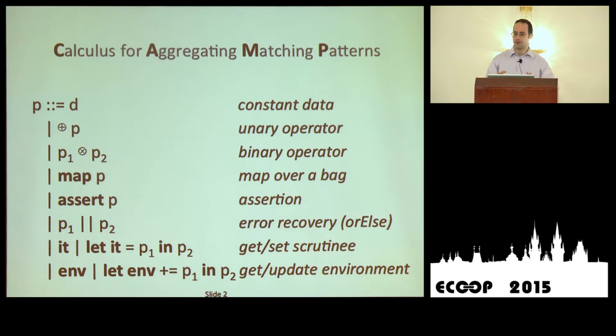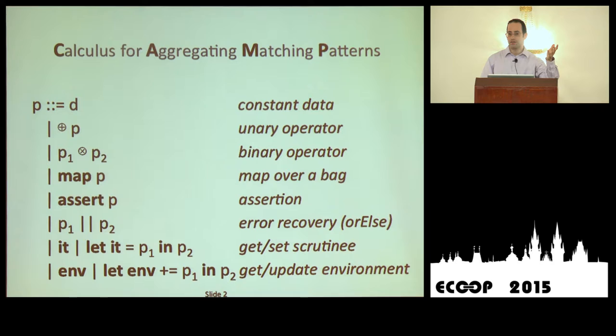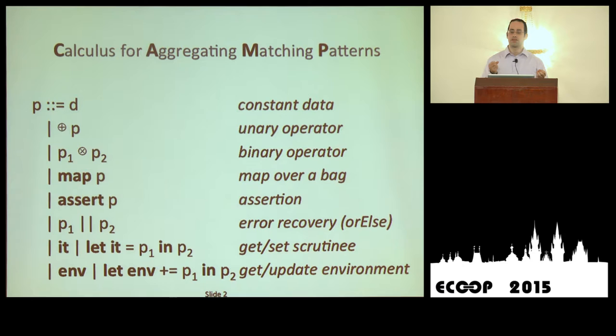In addition to the implicit data, there's an environment used to bind variables that you've already matched. When doing pattern matching, you generally want to say a value is bound to x. Interestingly, if you use x multiple times it must have the same value — so when you add to the environment, we ensure that if the variable is already there, the second binding must have the same value. We also allow you to retrieve the environment, which is reified as a record at runtime.